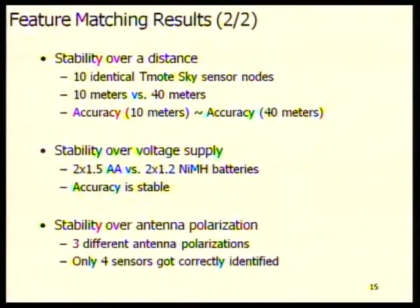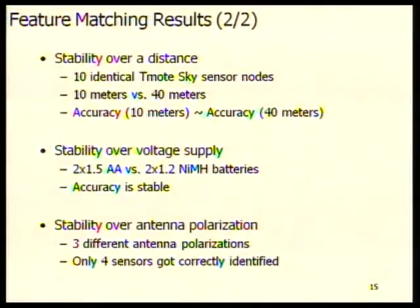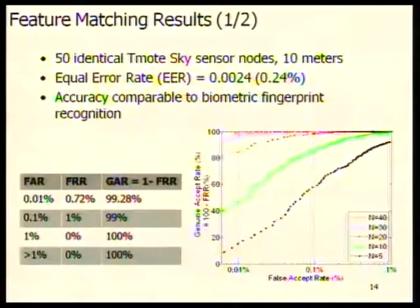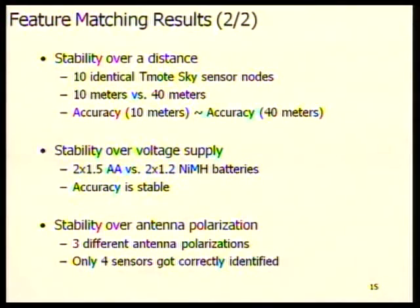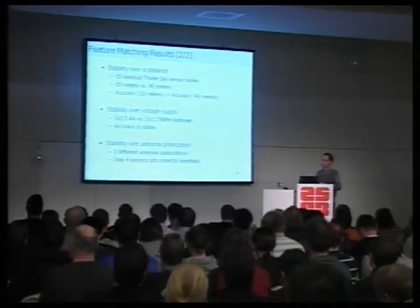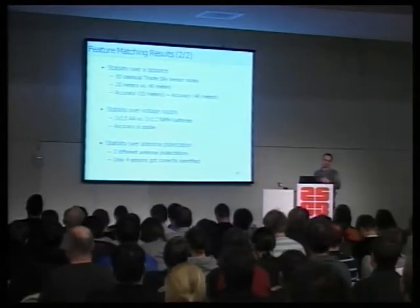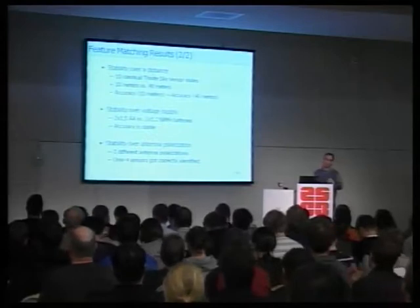The initial experiment was under controlled conditions at the same distance, same antenna polarization. We then tested over greater distances. The initial experiment was at 10 meters; we extended to a university parking space at 40 meters distance. The accuracy was essentially the same, within statistical error. Even over a large distance — the sensor device's maximum range is roughly 50–150 meters indoors — we are able to distinguish which device emitted the signal.